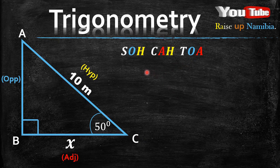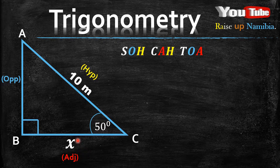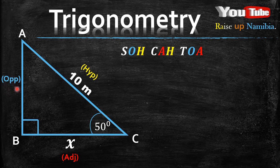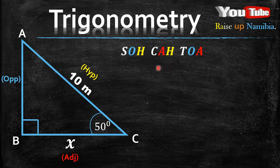Now when you bring out your word, check your labellings. Are you given a figure for the hypotenuse? Yes, you are given 10 meters. When you come to the adjacent, are you given a figure? Yes, you have an X which you are looking for — even though it's not a number, the fact that there is an X, we count that as a figure. When you come to the opposite, there is nothing — you are not given any figure for the opposite. So when you go back to your SOHCAHTOA, look for the ratio that doesn't have an opposite.